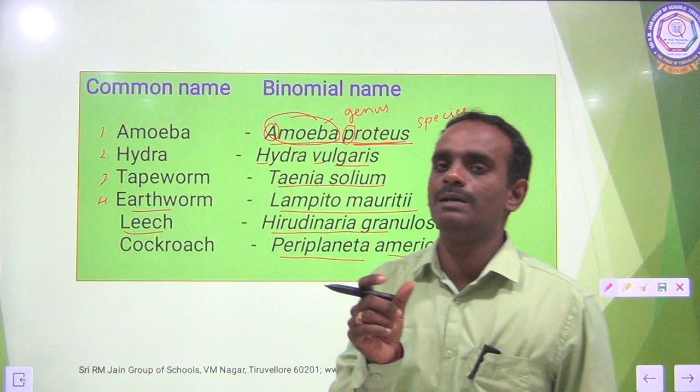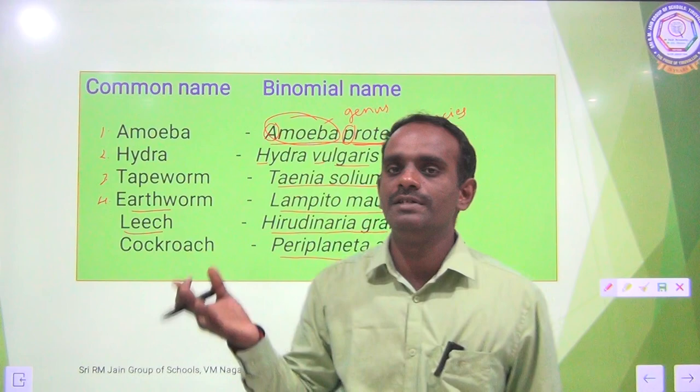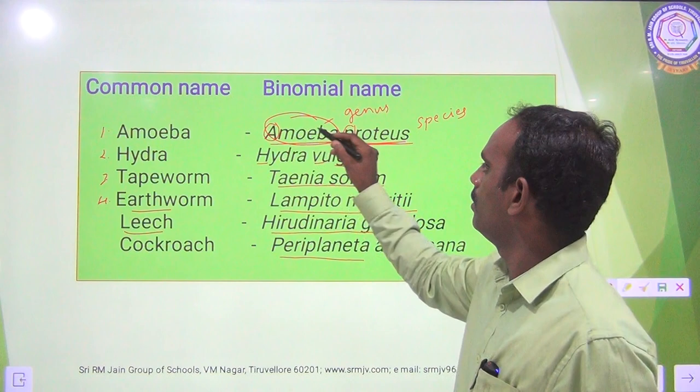Binomial name means having two names — the first one is the Genus name and the second one is the Species name. The Genus, the first name, starts with a capital letter followed by all small letters, including the Species name.